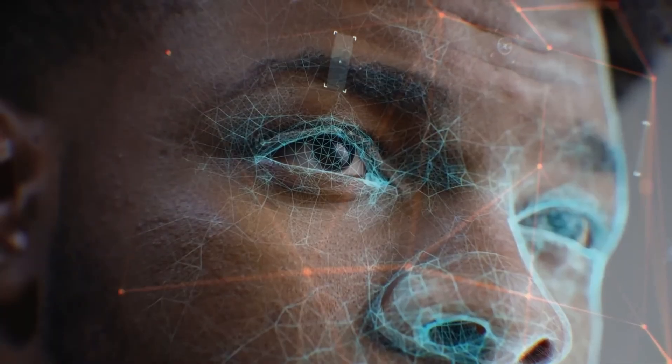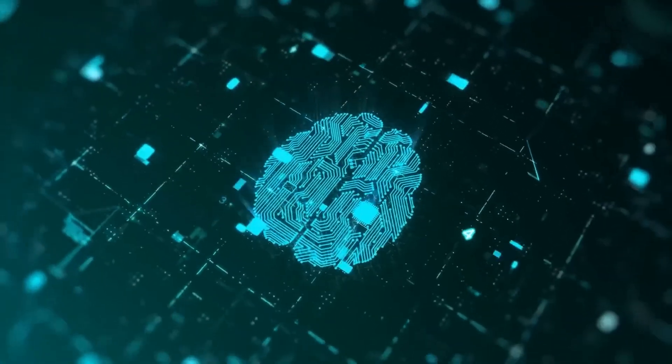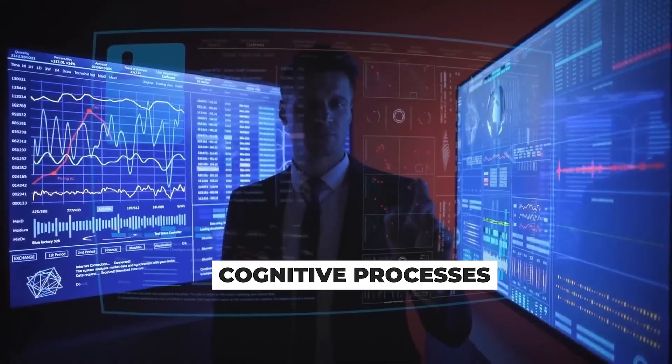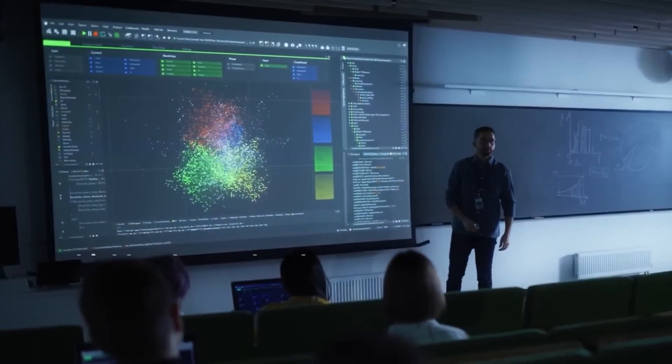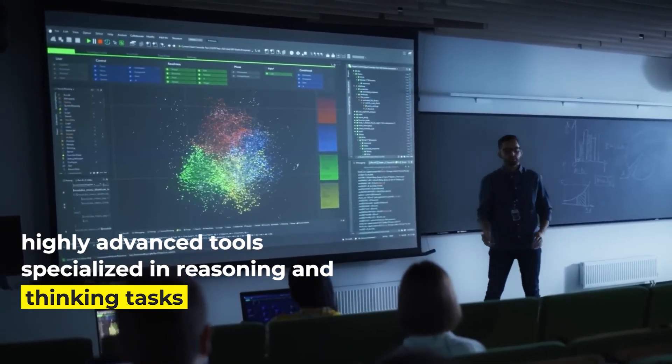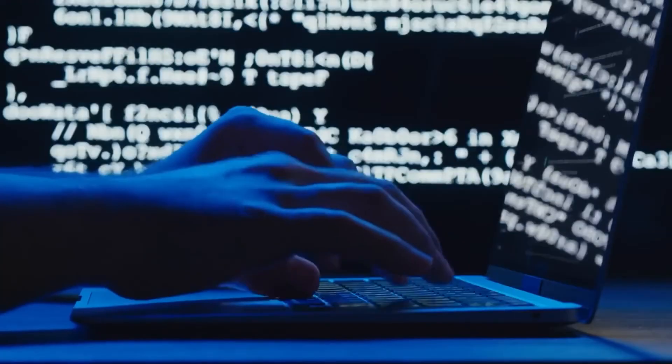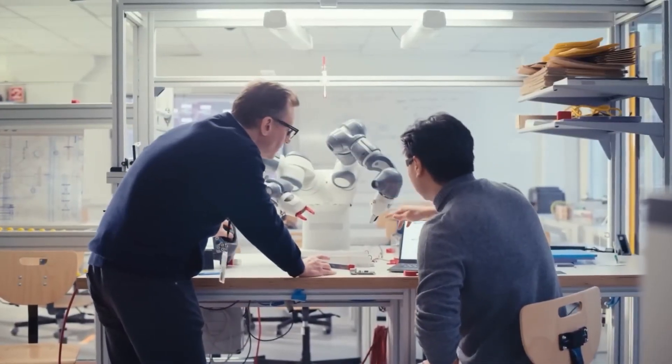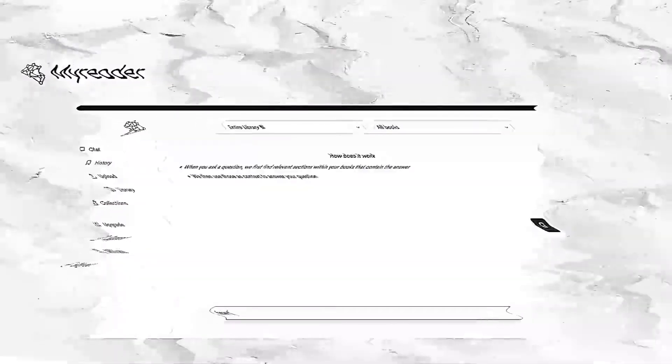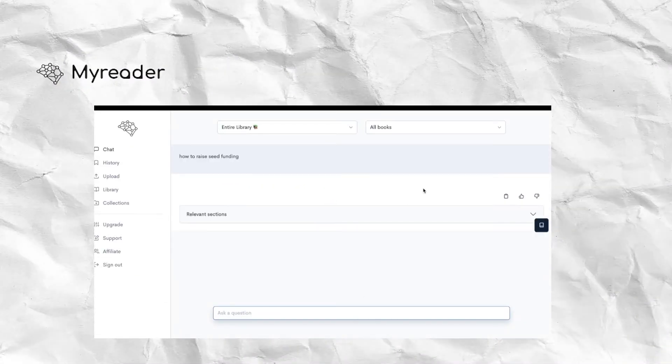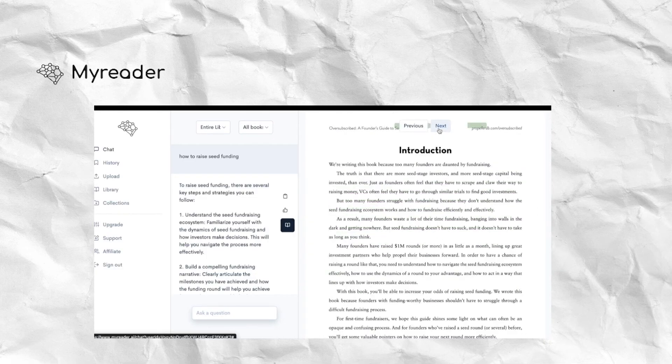Thinking and reasoning AI systems mark a significant departure from earlier stages by attempting to emulate the cognitive processes of the human mind. While not equivalent to human intelligence, they represent highly advanced tools specialized in reasoning and thinking tasks. The integration of machine learning allows these systems to learn from experience, improving their performance over time. For instance, such an AI system could read a book, understand the plot, and even infer the motives of characters based on their actions.